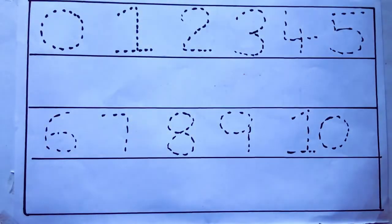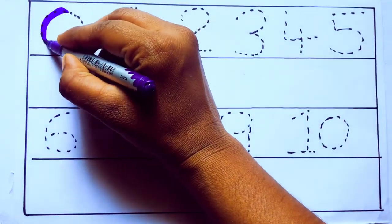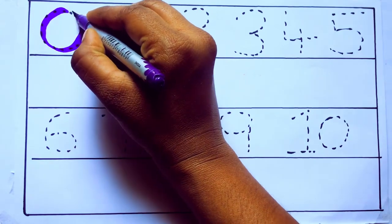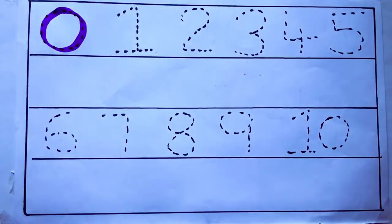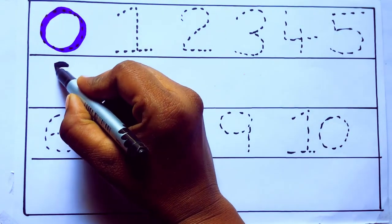Let's draw numbers. Violet color 0, Z-E-R-O. Violet color 0.